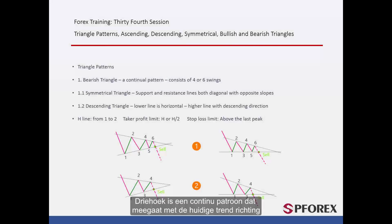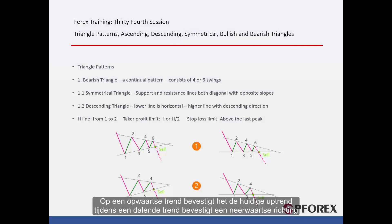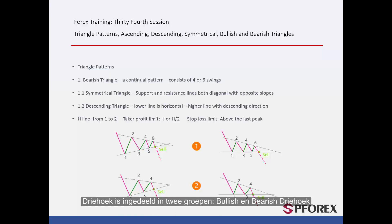A Triangle is a continuation pattern which shows an agreeing direction with the current trend. On an upward trend it confirms the current uptrend, while on a downtrend it confirms the downward direction. Triangles are classified into two groups: Bullish and Bearish Triangles.